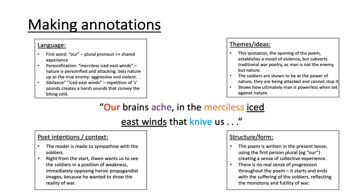The power of man is set up as weak and futile when put in opposition to nature. Right from the start, Owen wants us to see the soldiers in a position of weakness, immediately opposing heroic propagandist images, because he wanted to show the reality of war. This makes the reader feel sympathy for the soldiers as they are being attacked by an enemy which is far more powerful, making them seem hopeless. The poem is written in the present tense using the first person plural 'our,' creating a sense of collective experience and showing how the experience was shared by soldiers across the war.